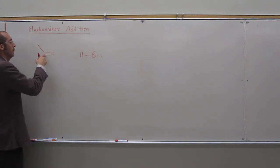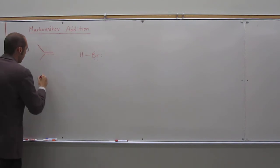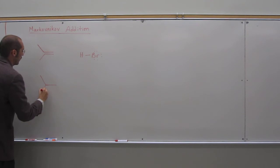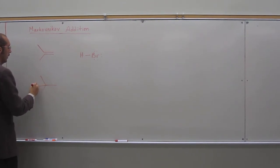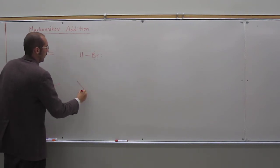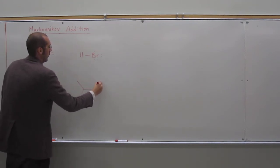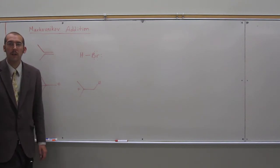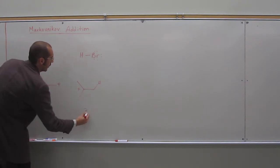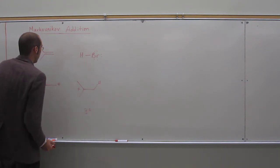So it's got a choice as to put the proton on this side or on this side. Those choices would give us two different carbocations. If we put the proton here, it would give us that primary carbocation. If we put the proton here, it would give us the tertiary carbocation, which that's the only one that it's going to do.